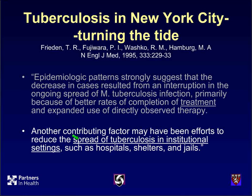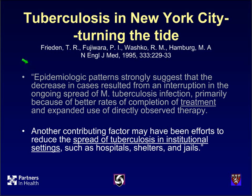In the New England Journal of Medicine, Tom Frieden — currently director of the CDC — attributed reversing this epidemic of MDR-TB in the United States to interrupting transmission primarily by better rates of completion of treatment. What I think Dr. Frieden didn't emphasize was that even placing people on effective treatment stopped transmission right away — not only curing patients, but even getting them on treatment had a huge effect. Another contributing factor may have been efforts to reduce spread in institutional settings such as hospitals, shelters, and jails, but perhaps the most important thing was to get people diagnosed and on therapy.